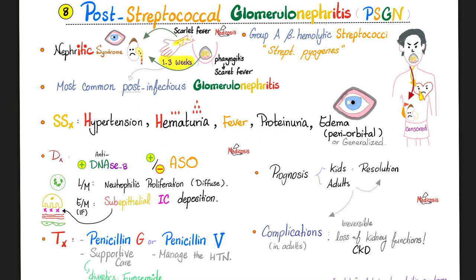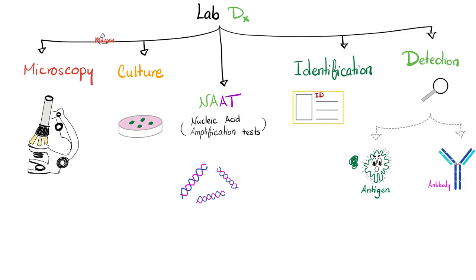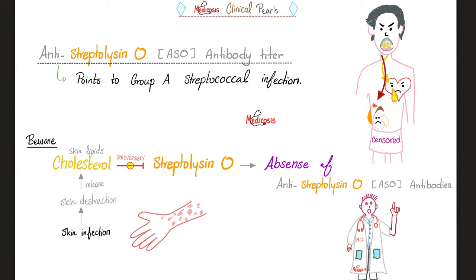Symptoms include hypertension, hematuria, fever, proteinuria, periorbital edema, and oliguria — this is a nephritic syndrome. For diagnosis, we use anti-ASO antibodies and anti-DNase antibodies. Anti-DNase antibodies will be present. Anti-ASO may or may not be present in kidney disease, and we will explain why. ASO antibodies are positive in rheumatic fever but may or may not be positive in acute post-streptococcal glomerulonephritis.